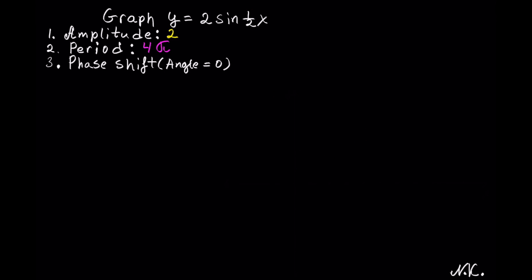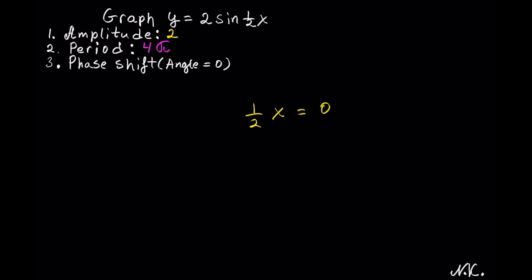The next thing is the phase shift. The phase shift calculates when the angle is equal to 0, because the first value we want to calculate is sine of 0, which is equal to 0. So let's calculate when the angle 1 half of x is equal to 0. We have 2 in the denominator, and the inverse of dividing by 2 is multiplying by 2. Whatever we do to one side of the equation, we have to do the same to the other side, so 0 times 2. The 2's cancel on the left, and we have x equals 0. So our phase shift is 0, which means the graph is not shifted.